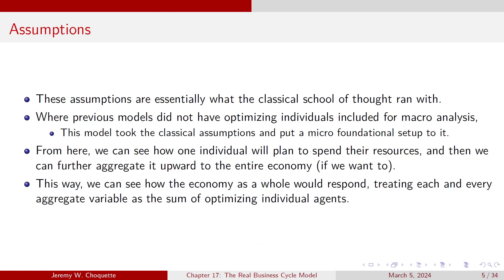These assumptions are really what the classical school of thought ran with. Where previous models didn't have optimizing individuals for macro, this model took these classical assumptions and put a micro-foundation setup to it. From here, we can see how an individual wants to plan to spend their resources, and then we can aggregate that upward to the entire economy — treating each aggregate variable as the sum of optimizing individual agents.